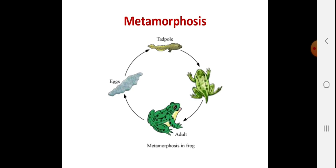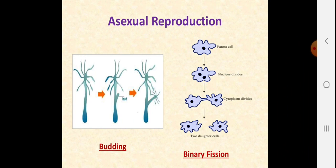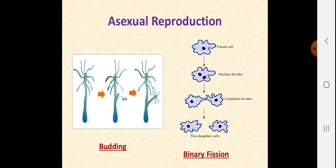Asexual reproduction involves only one parent. The types of asexual reproduction include budding, binary fission, spore formation, vegetative propagation, and fragmentation — though those are studied in detail in Class 10. In Class 8, we focus on two: budding, where a small bud grows on Hydra and detaches once mature to live independently; and binary fission, where the parent Amoeba cell divides into two daughter cells — first the nucleus divides, then the cytoplasm, producing two separate daughter cells.